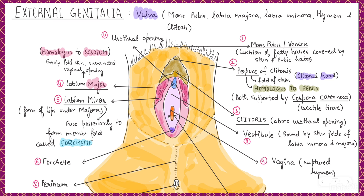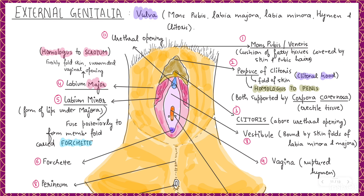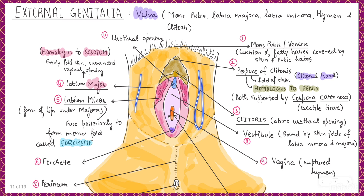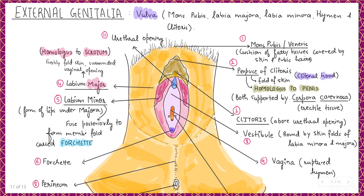In this video we are going to study the external genitalia of a female. The external genitalia of a woman is called the vulva, which consists of the mons pubis, labia majora, labia minora, hymen, and clitoris. These structures together make up the external genitalia known as the vulva.